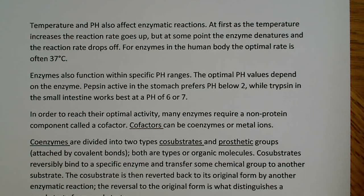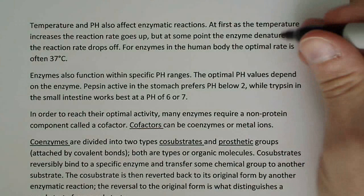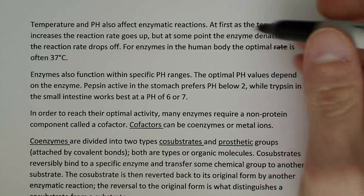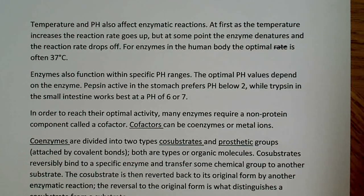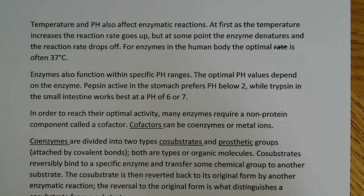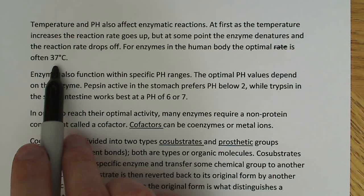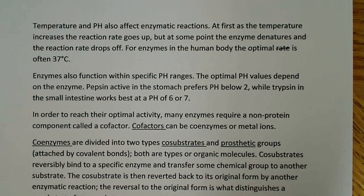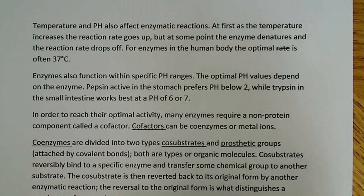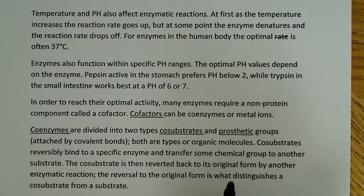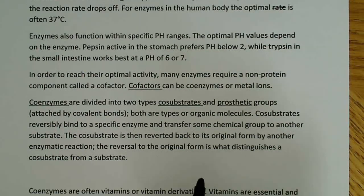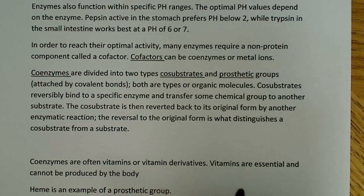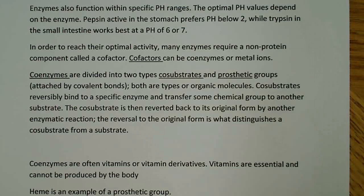For enzymes in the body, the optimal temperature is often 37 degrees Celsius. You might be asked to make calculations at 37 degrees Celsius, but sometimes problems give you other temperatures like 25 degrees Celsius — don't default to 37 as a standard number if a different temperature is provided.